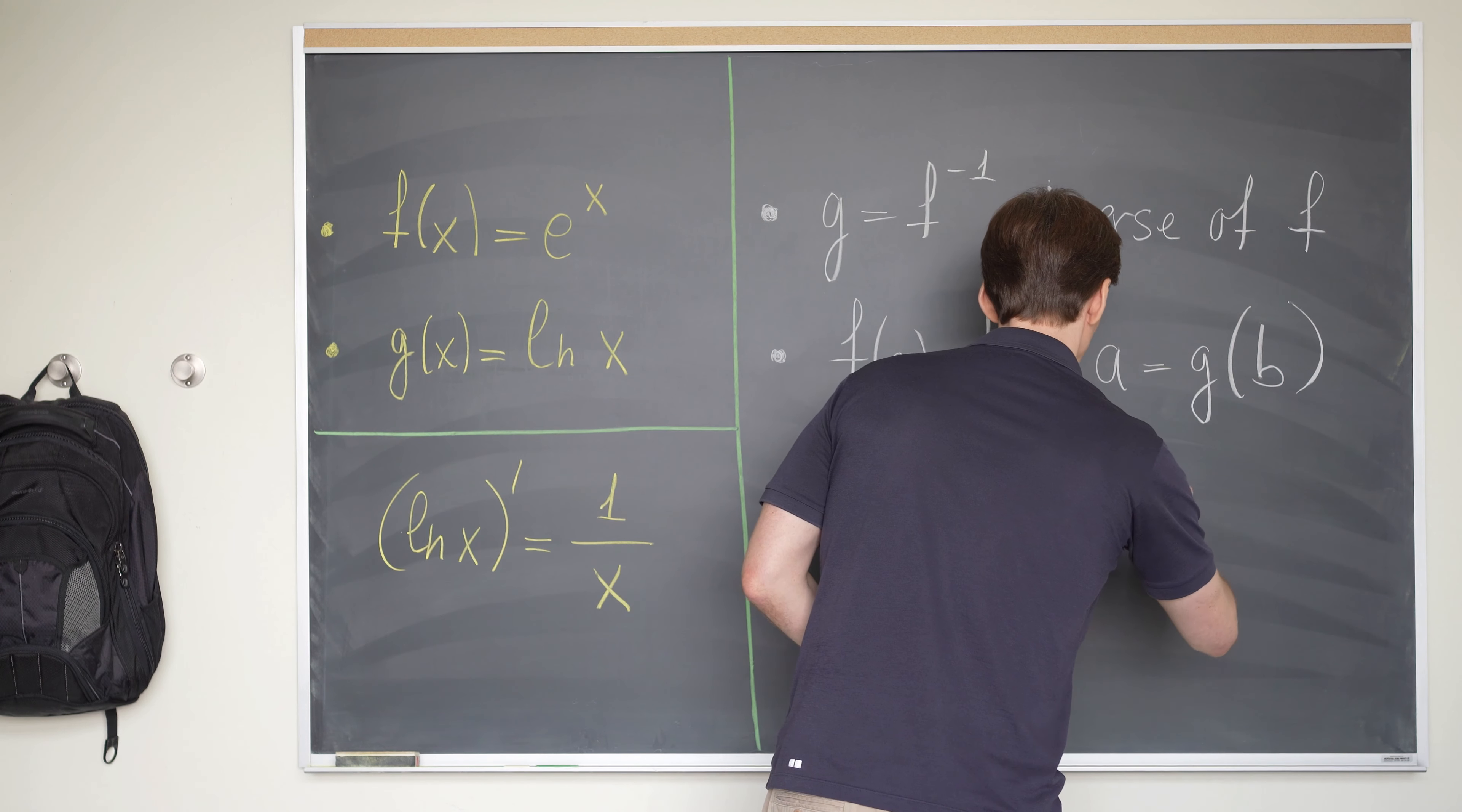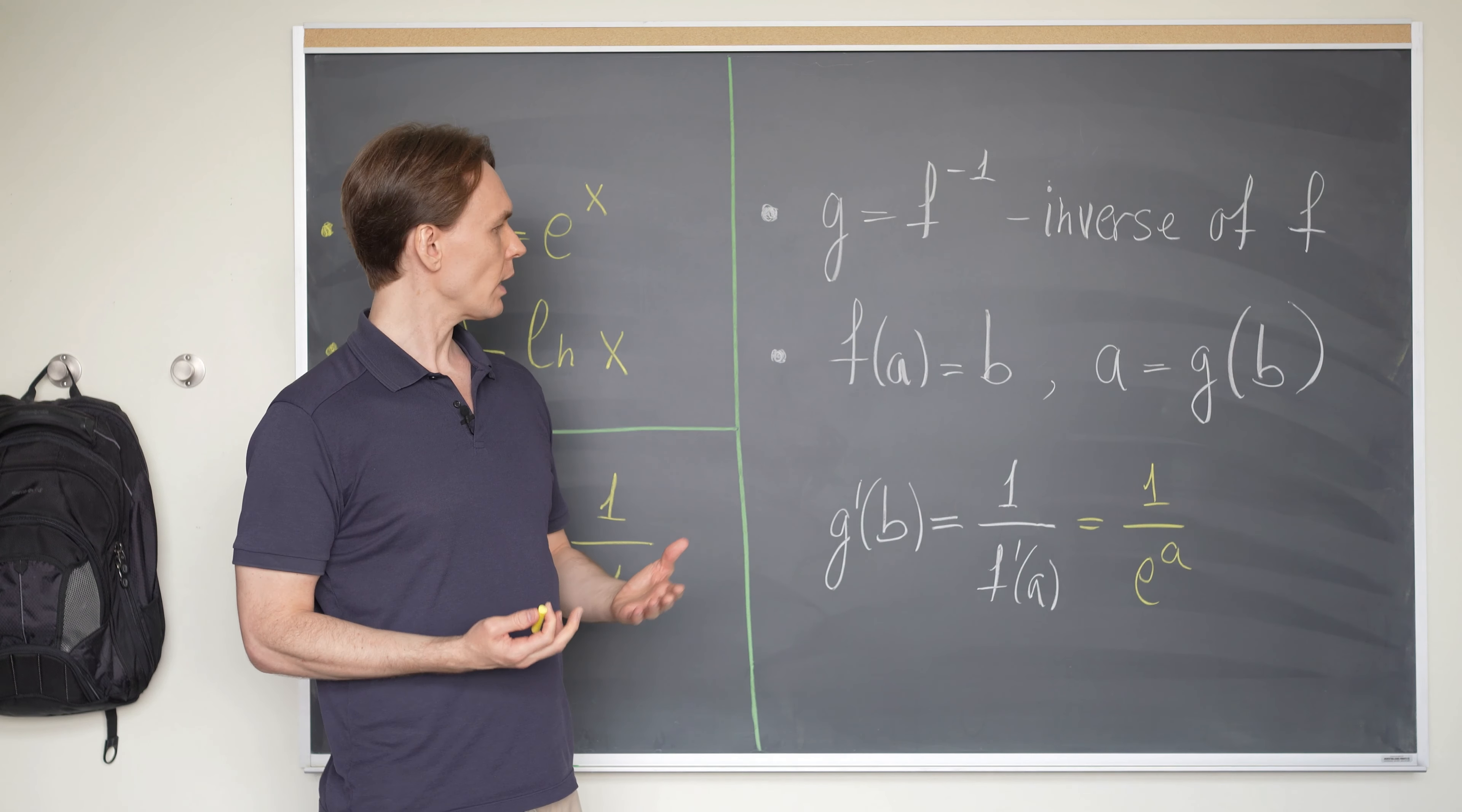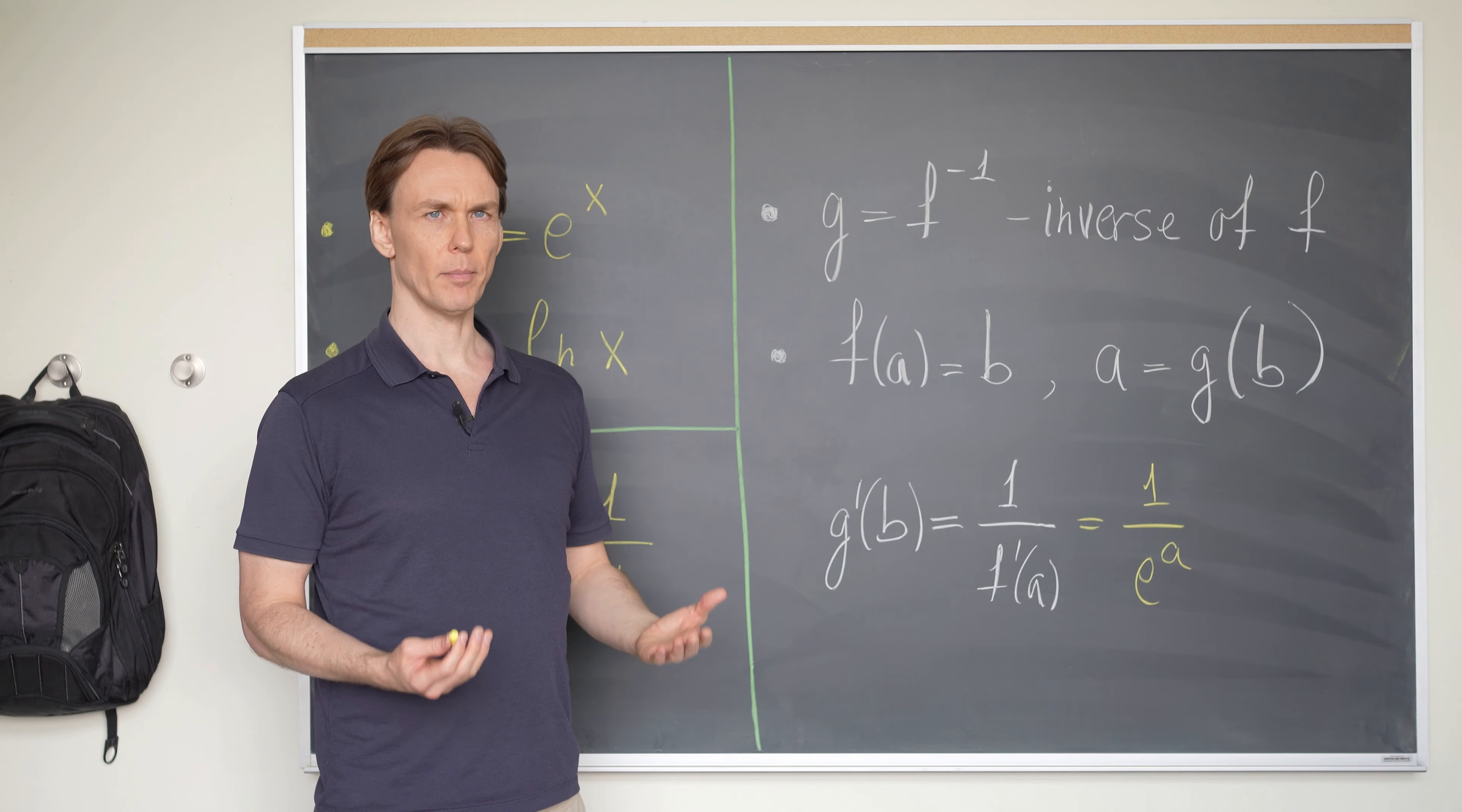This will be equal to one divided by e at the point a. And of course, e to the a is equal to b. So we can also rewrite this as one divided by b.